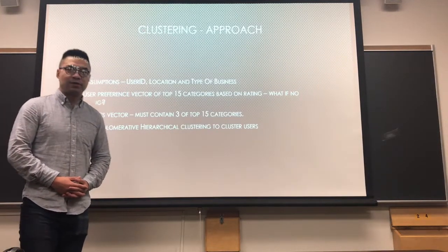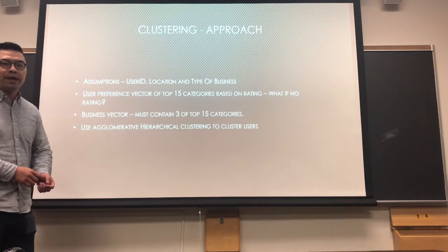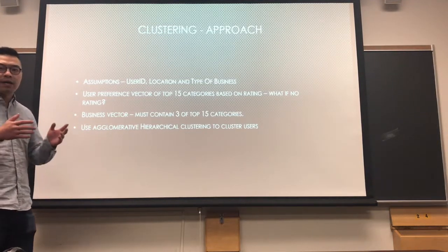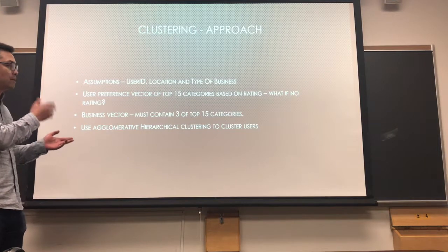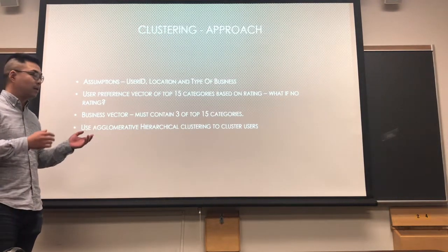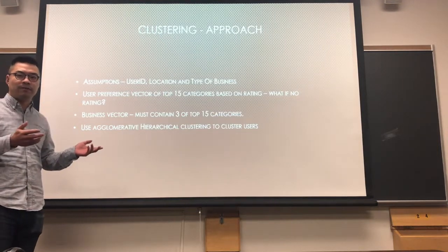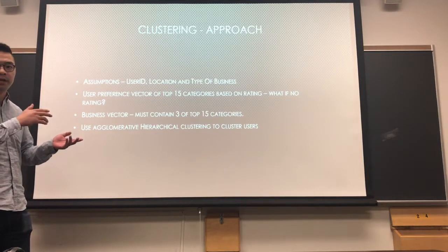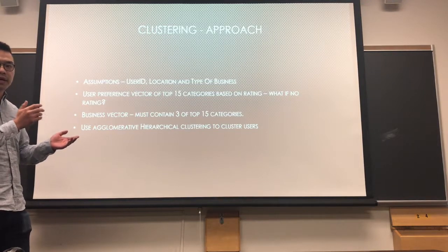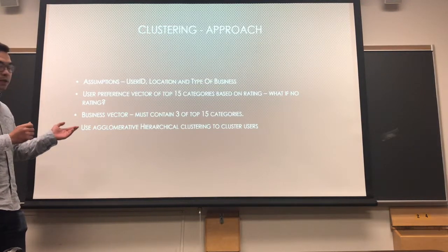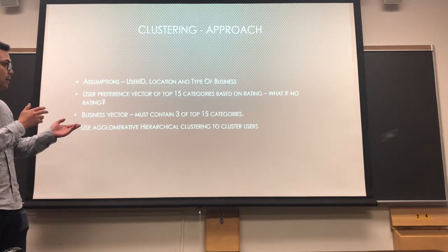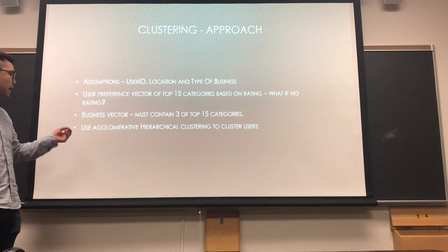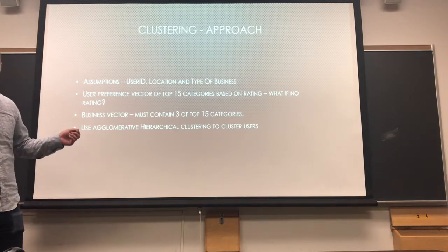Hello everyone, my name is Xing Xing. In the clustering approach we have several assumptions. We assume that the users and businesses are from the same location and we limit the business type to restaurants only. For each user and business, we build a preference vector of the top 15 categories based on user reviews. If the user doesn't have a review on a particular business, we assign a neutral value to that category. For the business, we only take businesses that contain at least 3 of the top 15 categories. After that, we apply agglomerative hierarchical clustering to the users.